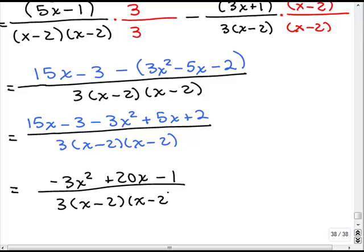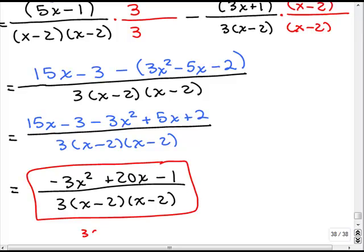Okay. Now, the next step would be to see if I could factor the numerator and I can't. Okay. That's not going to factor. So, you could leave your answer like this. Or, like I said, you can write the denominator as 3 times x minus 2 squared if you want. Alright.